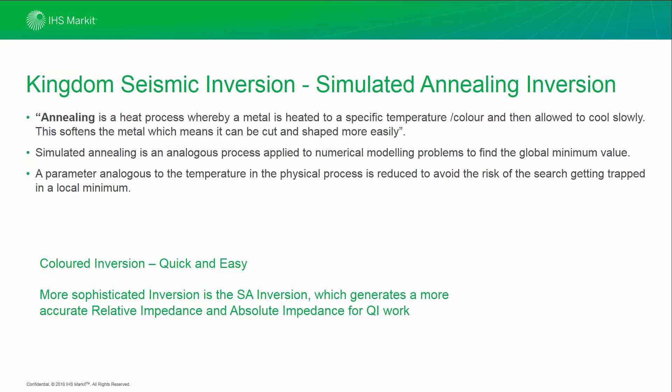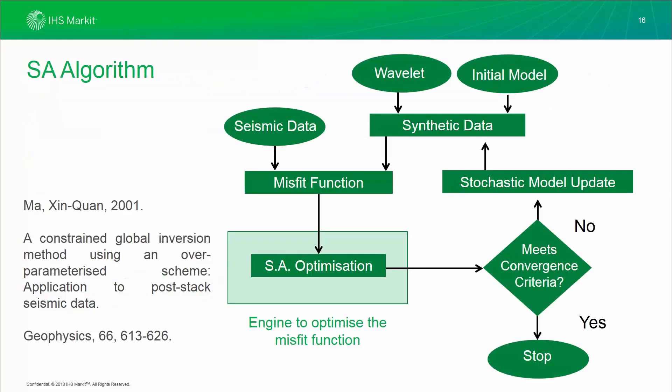Coloured Inversion is quick and easy, but the more sophisticated inversion is the SA Inversion, which generates a more accurate relative impedance and absolute impedance for QI work. The SA algorithm requires additional data types compared to Coloured Inversion, in that we require a wavelet and an initial starting macro model. The inversion is very sensitive to the quality of this wavelet, so it's important to get a good correlation. But the inversion isn't so sensitive to the starting macro model, so this can be fairly loose.